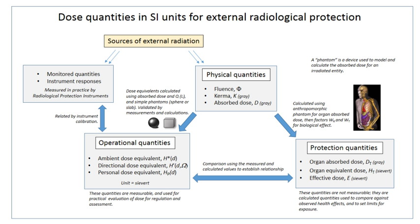The mechanism by which this occurs is well understood, but quantitative models predicting the level of risk remain controversial. The most widely accepted model posits that the incidence of cancers due to ionizing radiation increases linearly with effective radiation dose at a rate of 5.5% per sievert. If this linear model is correct, then natural background radiation is the most hazardous source of radiation to general public health, followed by medical imaging as a close second. Other stochastic effects of ionizing radiation are teratogenesis, cognitive decline, and heart disease.